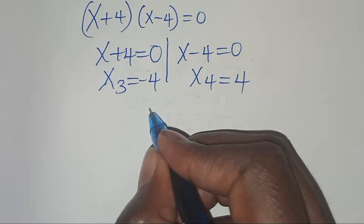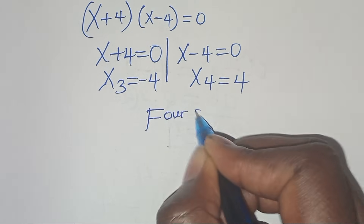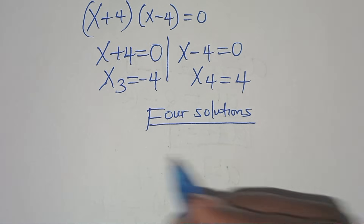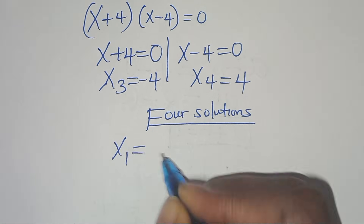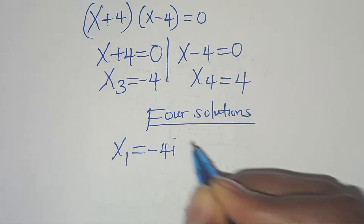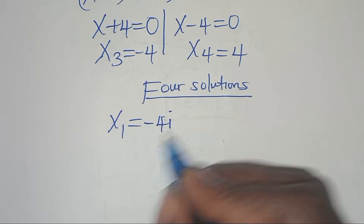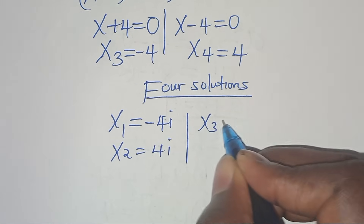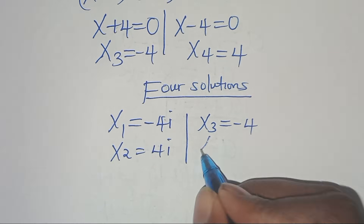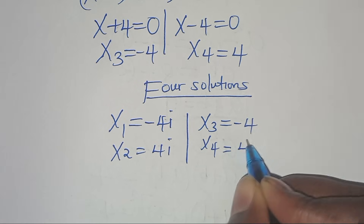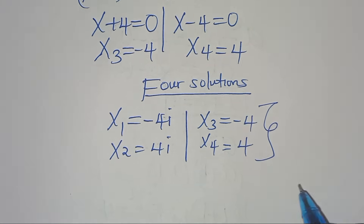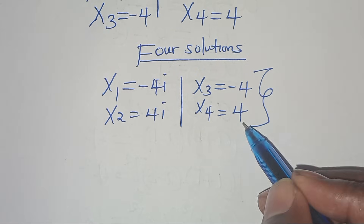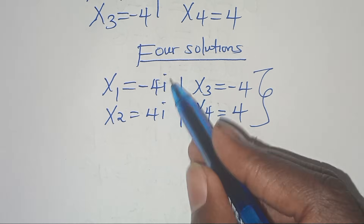So we have four solutions in total: x₁ = -4i, x₂ = 4i, x₃ = -4, and x₄ = 4 — two complex solutions and two real solutions. Let's verify that these solutions satisfy the original equation.